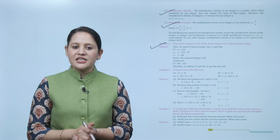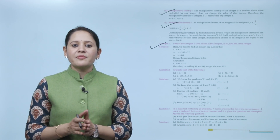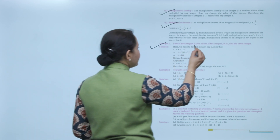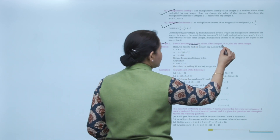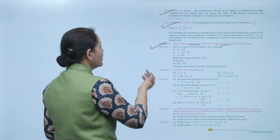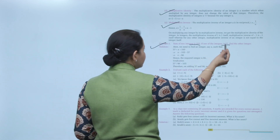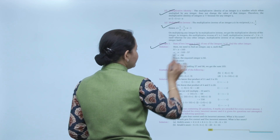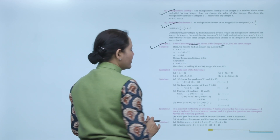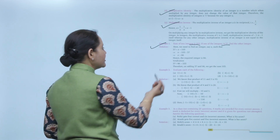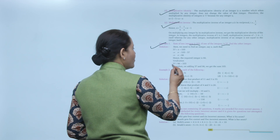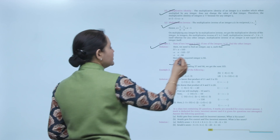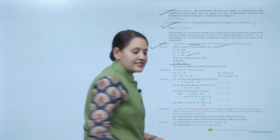Now we will take an example. The sum of two integers is 103; if one of the numbers is 37, find the other number. Solution: the sum is 103 and one number is 37. If the other number is x, then 37 plus x equals 103, so x equals 103 minus 37, which equals 66. We can verify: 37 plus 66 equals 103, so our answer is correct. The other number is 66.